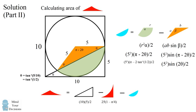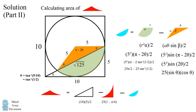Substituting that in, we simplify the formula for the area of the sector. For the isosceles triangle, we use the double angle formula for sine of 2 theta. We need sine and cosine of theta. In this right triangle with sides 10 and 5, the hypotenuse by the Pythagorean theorem is the square root of 125. So sine of theta equals 5 over root 125 and cosine of theta equals 10 over root 125. Substituting in and simplifying, the area of this isosceles triangle equals 10.